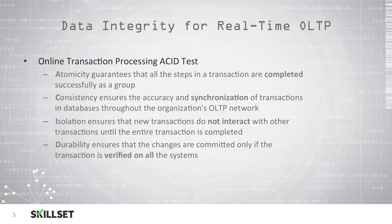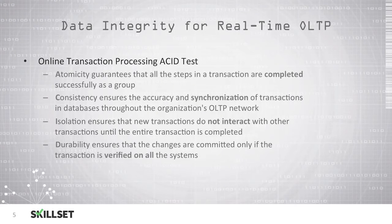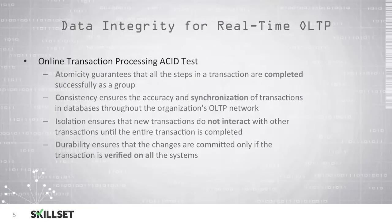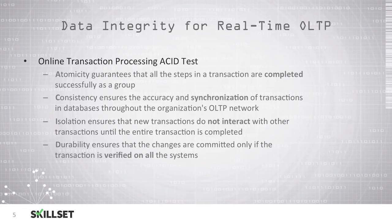For the CISSP examination, you should remember that online transaction processing uses the four-step ACID test. The first step, atomicity, guarantees that all of the steps in the transaction are completed successfully as a group. Consistency ensures the accuracy and synchronization of transactions in databases throughout the organization's OLTP network. Isolation ensures that new transactions will not interact with other transactions until the entire transaction is completed. Finally, durability ensures that the changes are committed only if the transaction is verified on all of the systems.